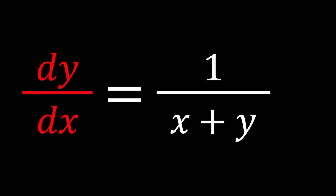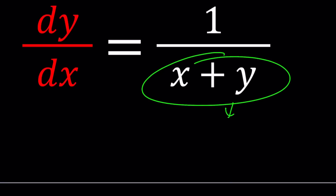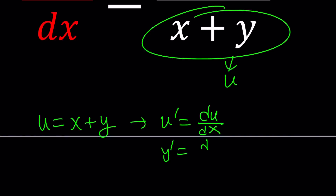For my first method I'm going to go ahead and replace x plus y with something. A lot of times when we have expressions like this — a linear combination of x and y — it makes sense to use substitution. We're going to call this u, so u is equal to x plus y. Since y is a function of x, u is also a function of x, so we can talk about du over dx. When I write u prime I mean du over dx, and y prime is the same as dy over dx.